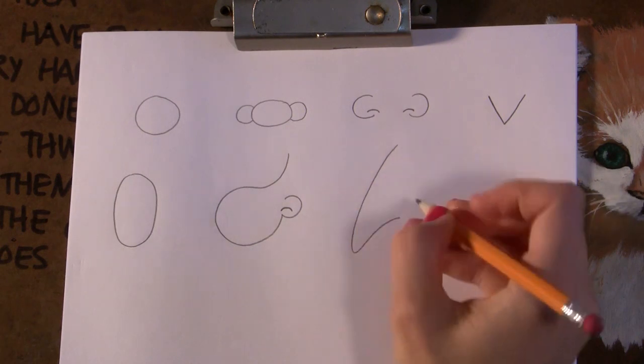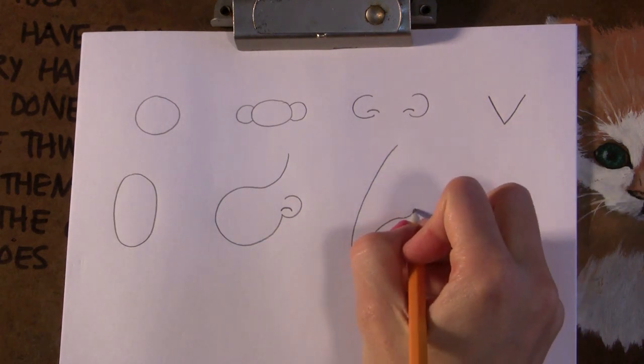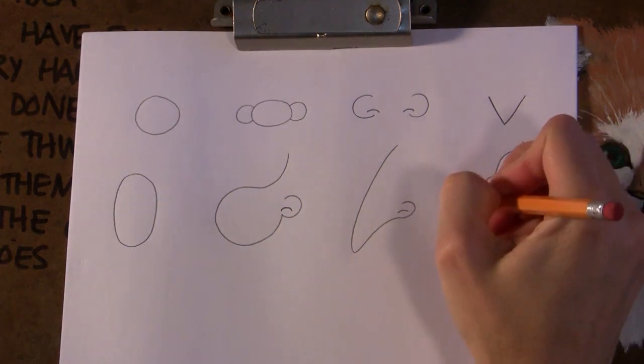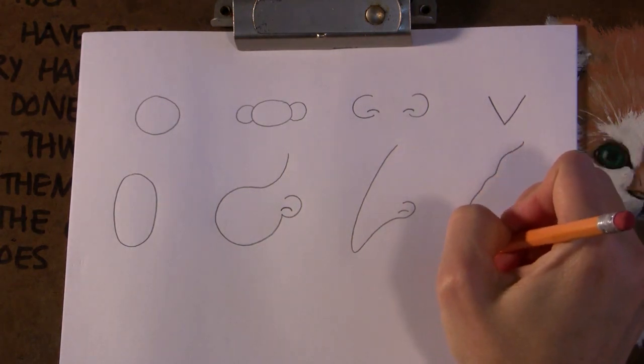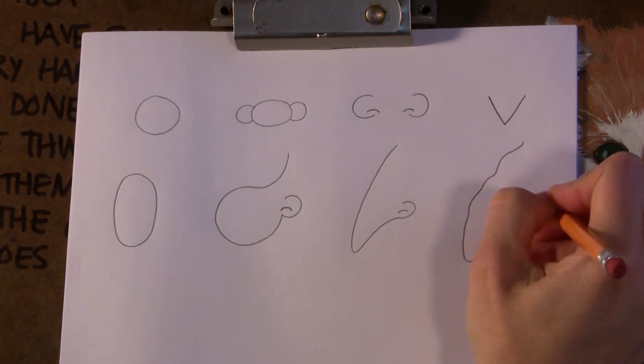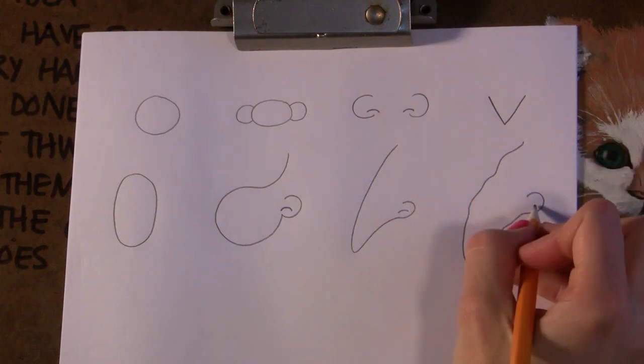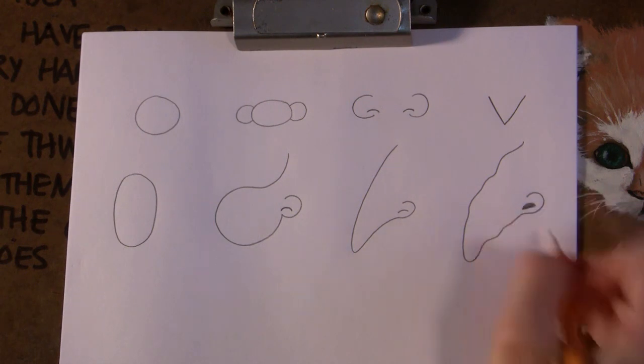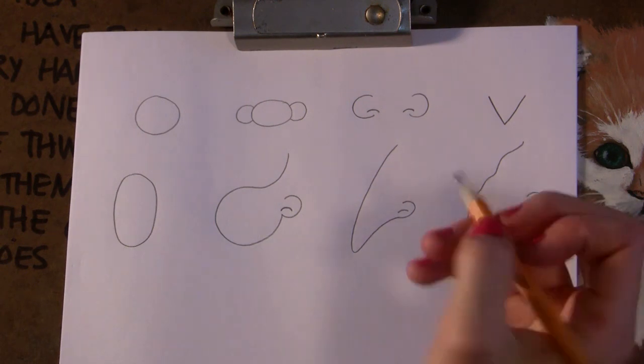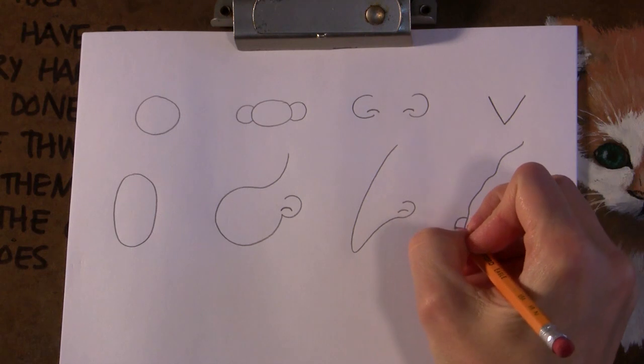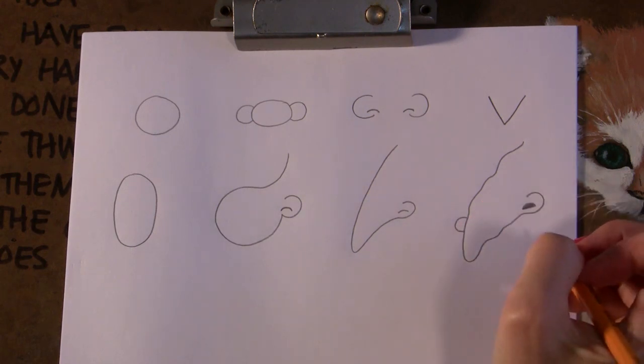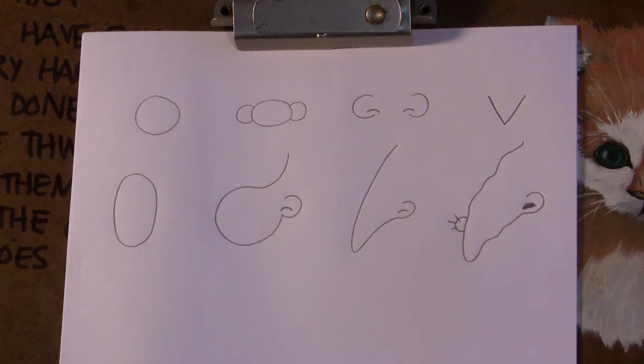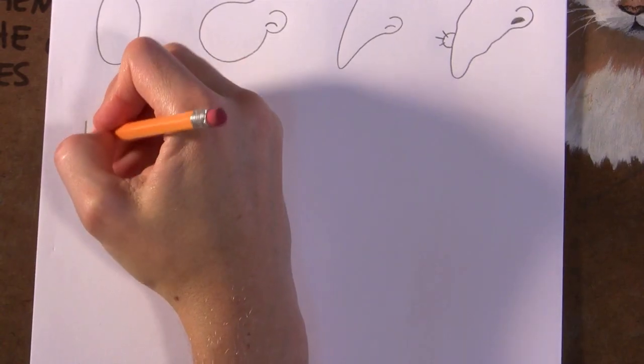Some noses are pointy. Bring it down and back up, and then do a bump with a line. See, like bumpy and down, it's bumpy and back up like this, and then you could even do like an oval nostril hole like that.